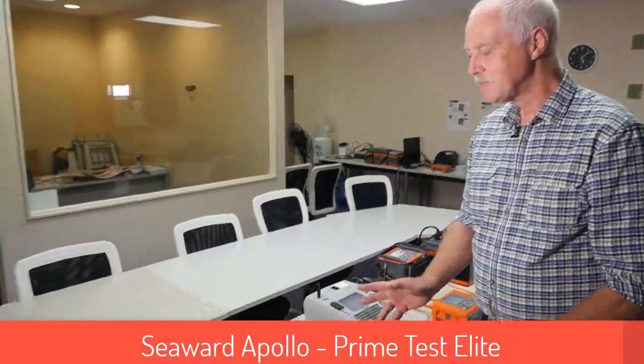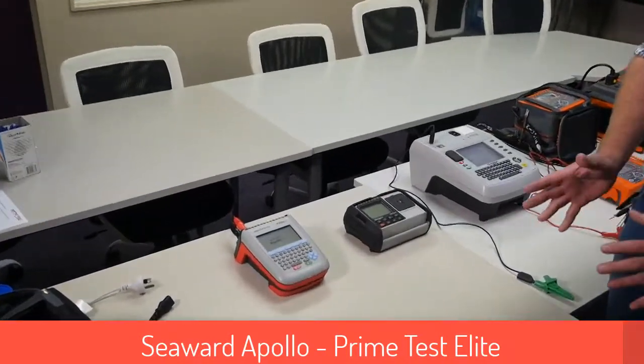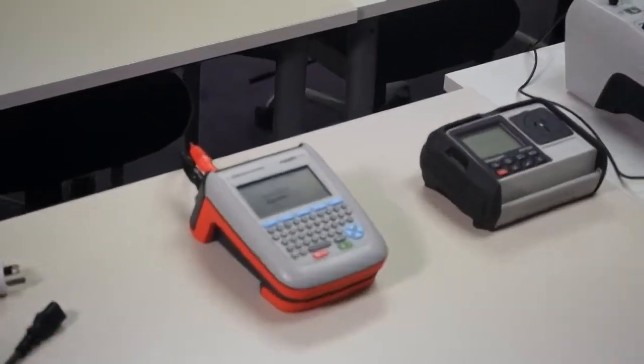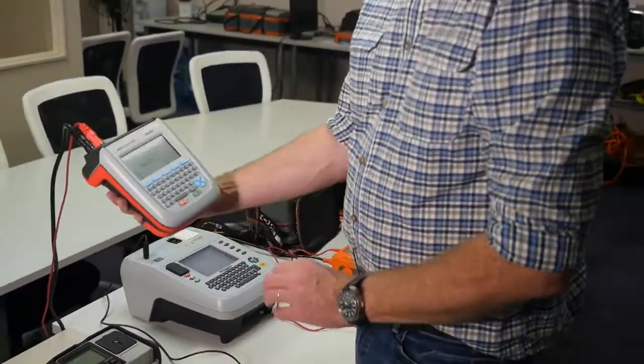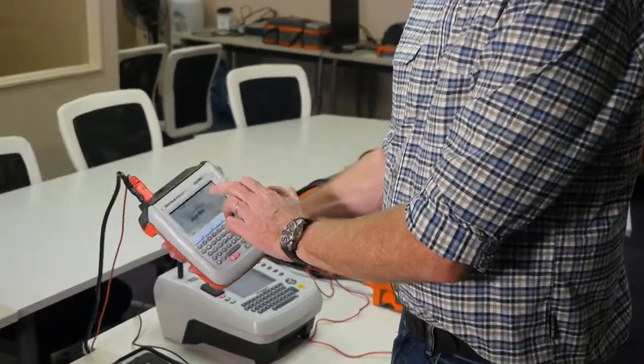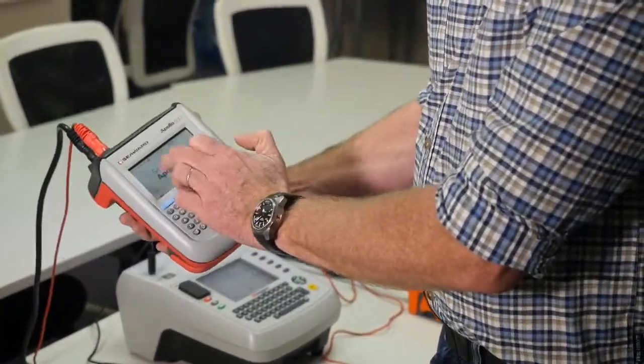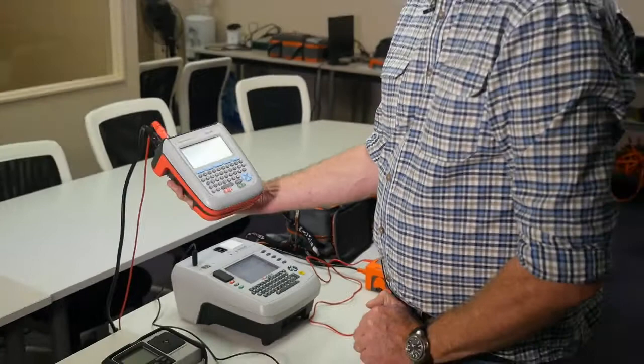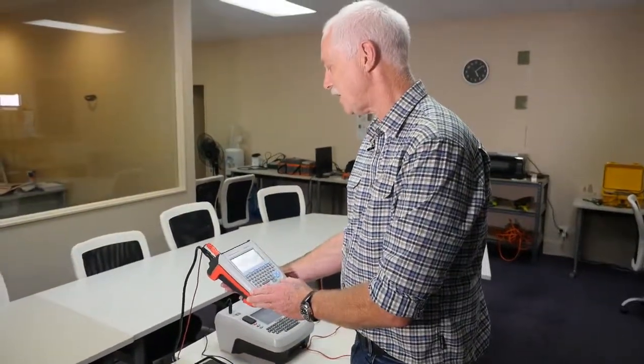We're going to start over here with the Seaward Apollo. In New Zealand and Australia, sometimes this is called the Prime Test Elite, and it's basically the same unit. It is actually quite a nice little unit. It looks very nice. You'd think it's a touch screen because it's all color and you can tap it, but unfortunately, it still doesn't actually behave as a touch screen, possibly because it isn't a touch screen.